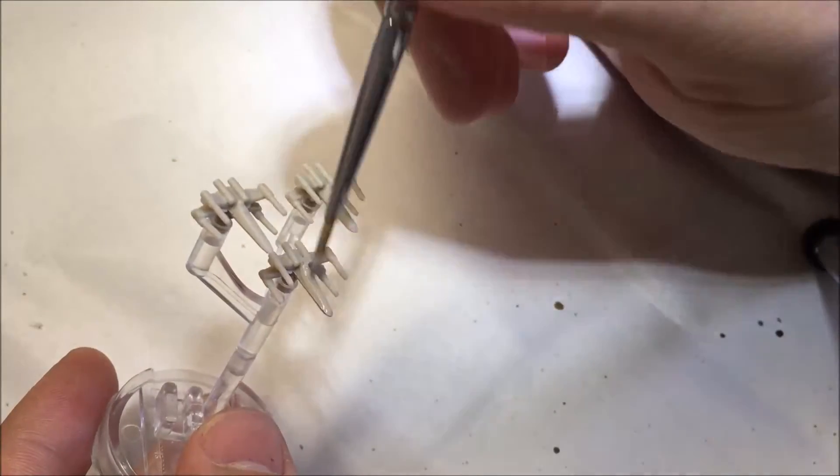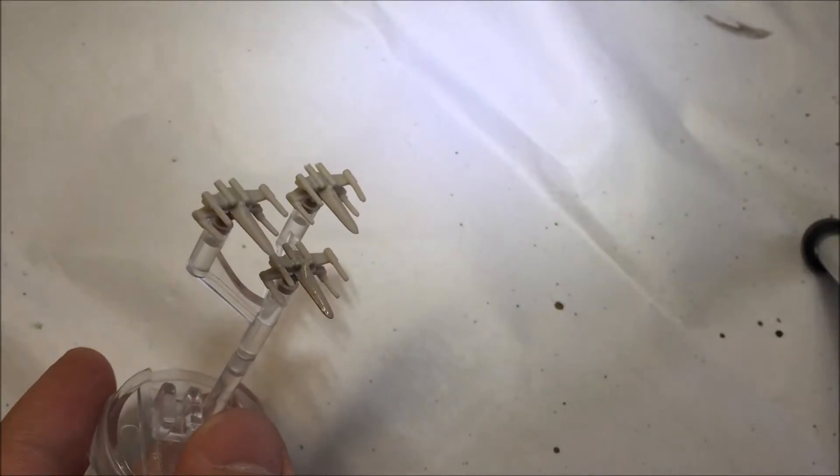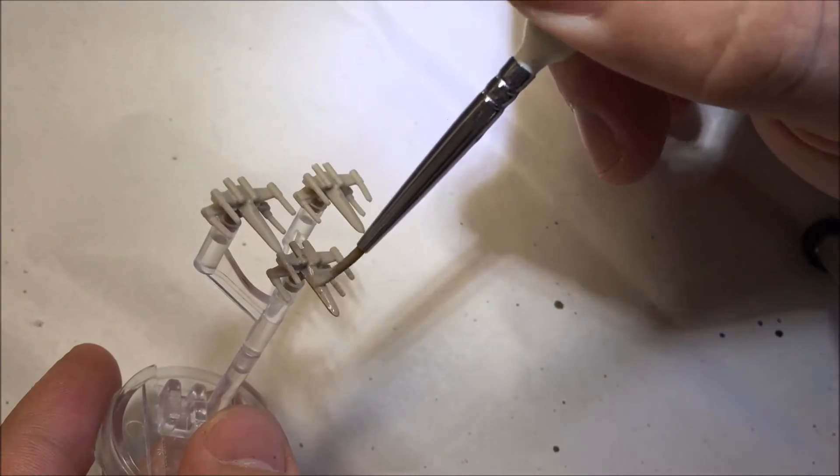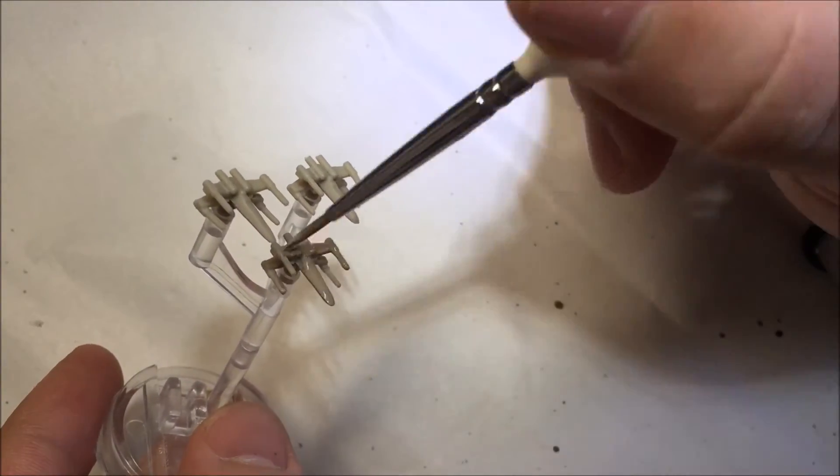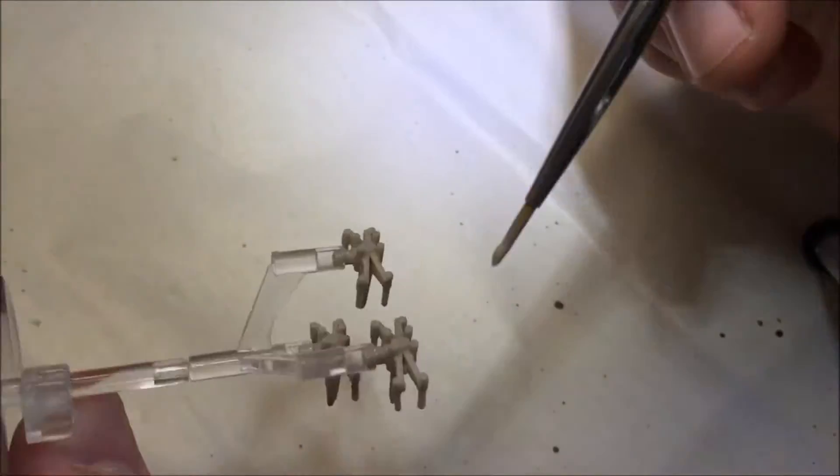The first two steps are the same for all fighters. First base coat the fighters in a cream. I've used Rakarth Flesh from the Games Workshop range. Make sure you cover the whole fighter including the bottom.